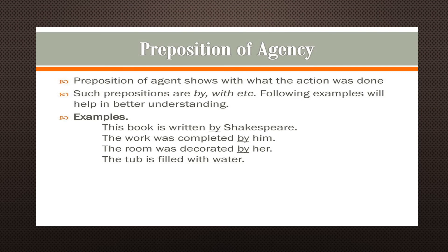Coming to preposition of agency. Preposition of agency shows with what or by whom the action was done — what was the means, what was the agency. Prepositions like by and with are called prepositions of agency. Examples: this book is written by Shakespeare; the work was completed by him; the room was decorated by her; the tub is filled with water.